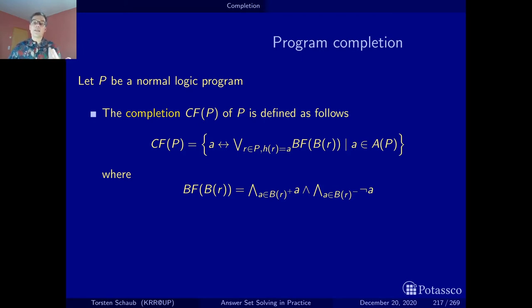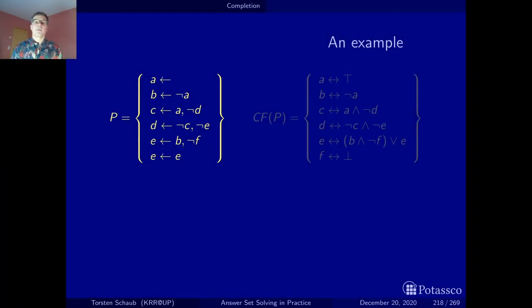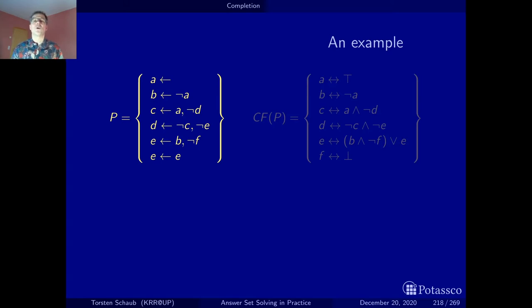The neutral element of disjunction is false, so for all atoms that have never been defined by a rule, we get that the atom is equivalent to false. Perhaps pause here to digest this before we look at an example. Clark's completion is a purely syntactic translation — we take a logic program and transform it into a set of equivalences — so let's just do this without worrying too much about what the program is telling us.